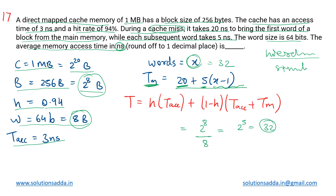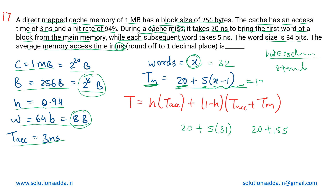We need to fetch 32 words. The time required is given by the t_memory expression: 20 plus 5 times 31, because the first word takes 20ns and the remaining 31 words each take 5ns. This becomes 20 + 155 = 175 nanoseconds. So t_memory = 175ns.